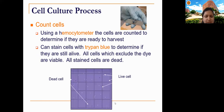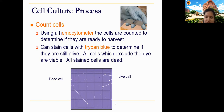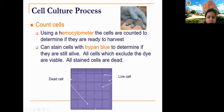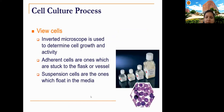The hemocytometer is used for cell counting. It has 16 squares arranged in four blocks of 16 squares. Cells are stained with trypan blue — a reagent that only stains dead cells blue, while living cells appear white. By counting the number of cells in each square and applying a formula, you can determine the total number of cells and calculate the percentage of viable cells.